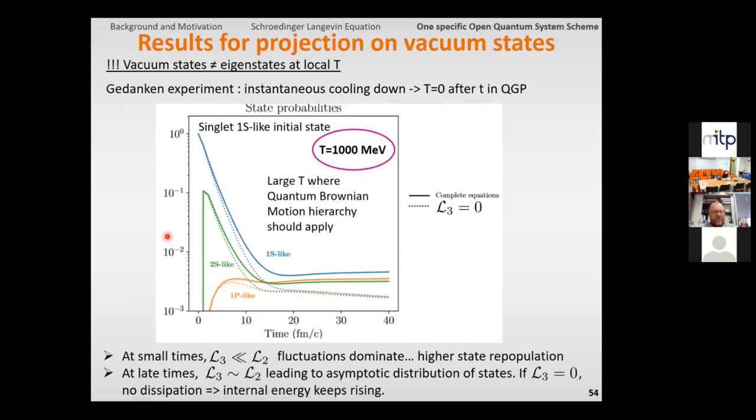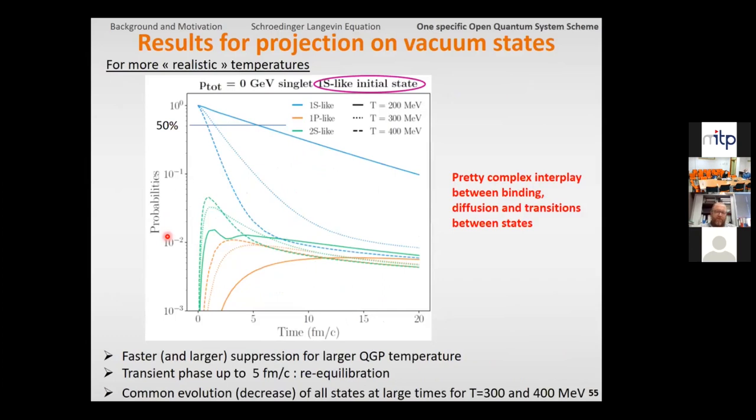We can now project on eigenstates, and this is typically the projection that we get starting, for instance, from 1s state, so depending on the temperature, one can see a pretty simple exponential-like decay, with a decay rate that increases with temperature, and on the top here, one sees a generation of 1p-like or 2s-like states along time.